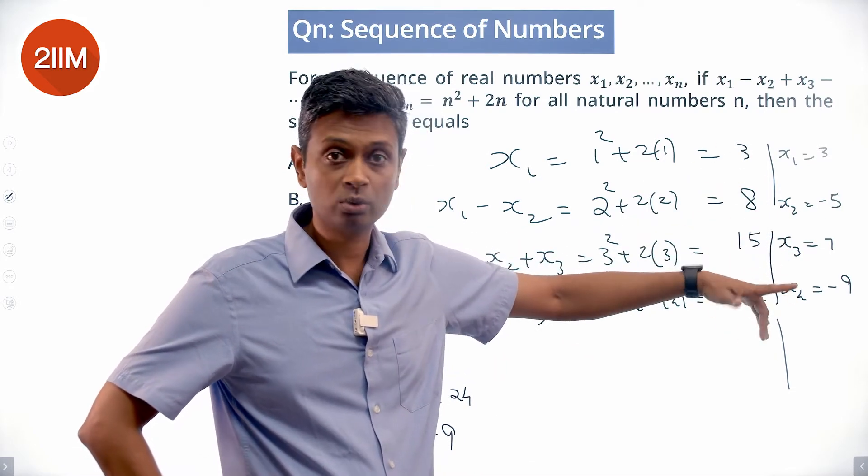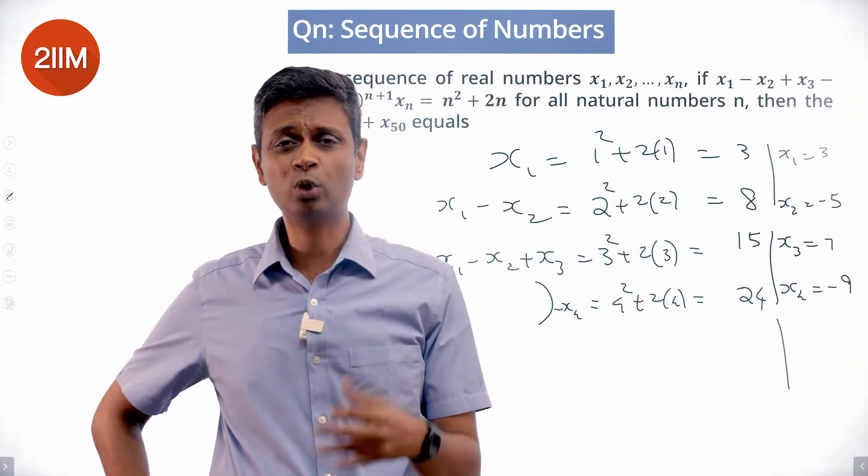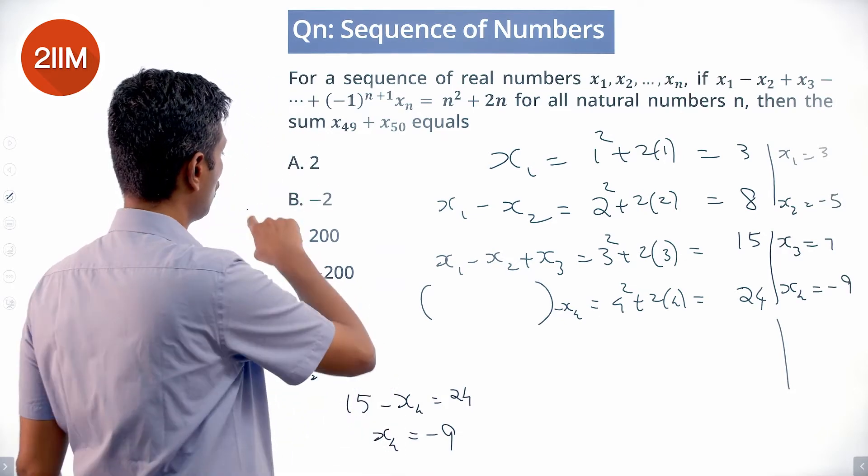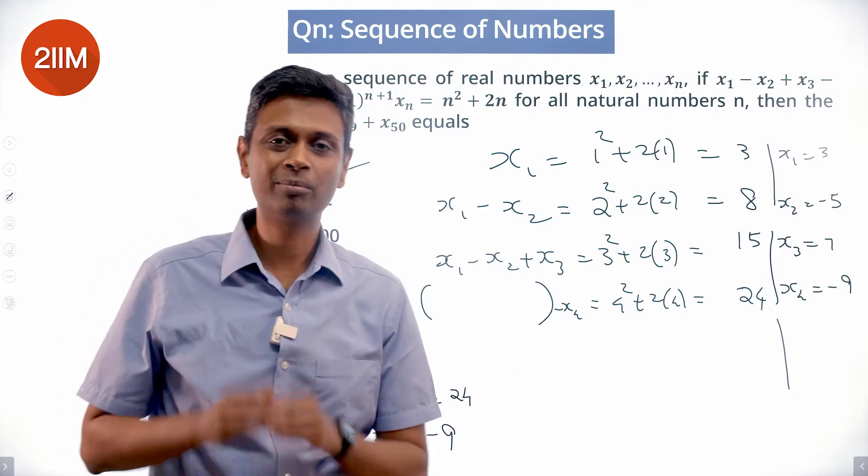We keep on adding and getting minus 2 for each chunk. So x49 plus x50 is also equal to minus 2. Get the numbers, see the pattern, and we're through.